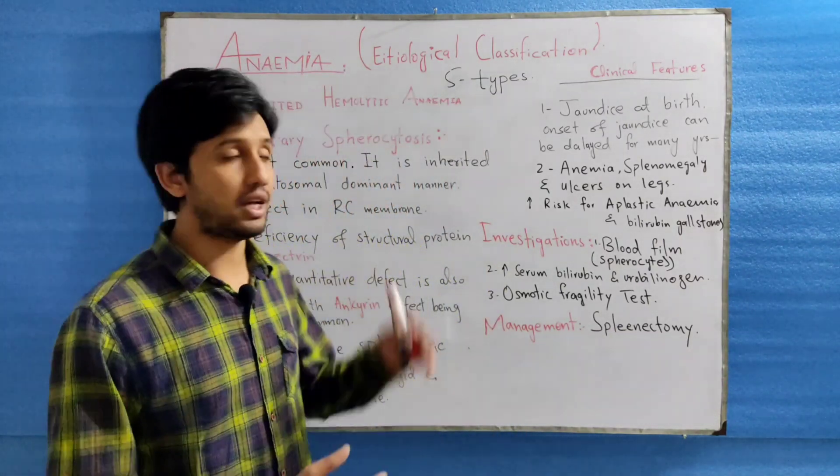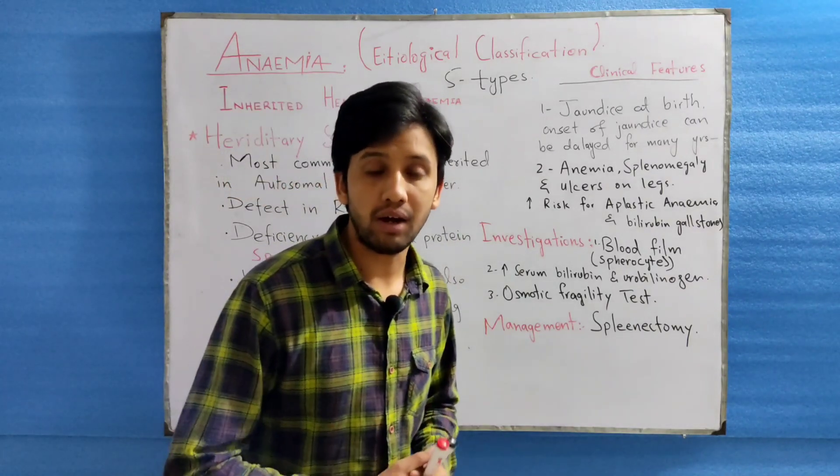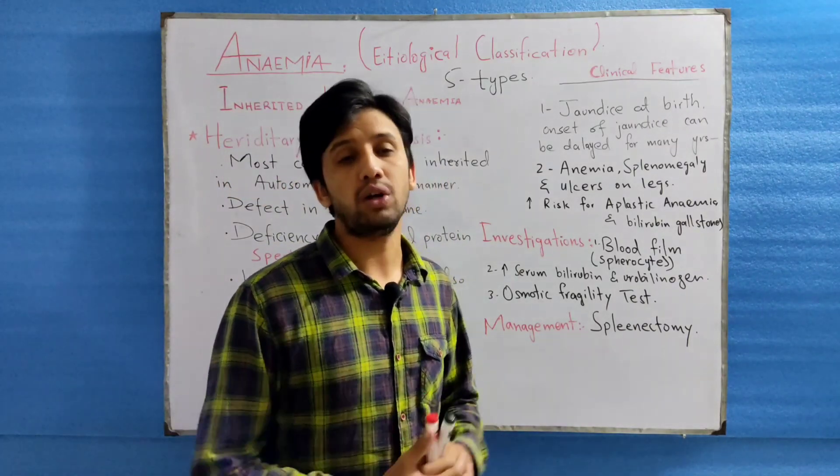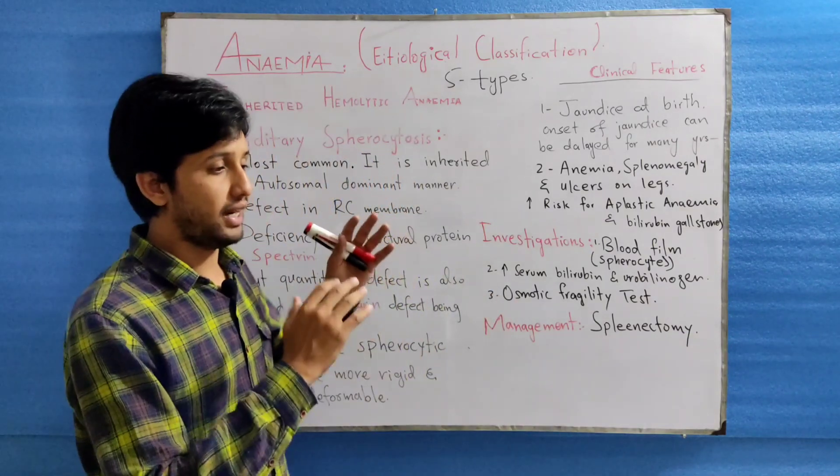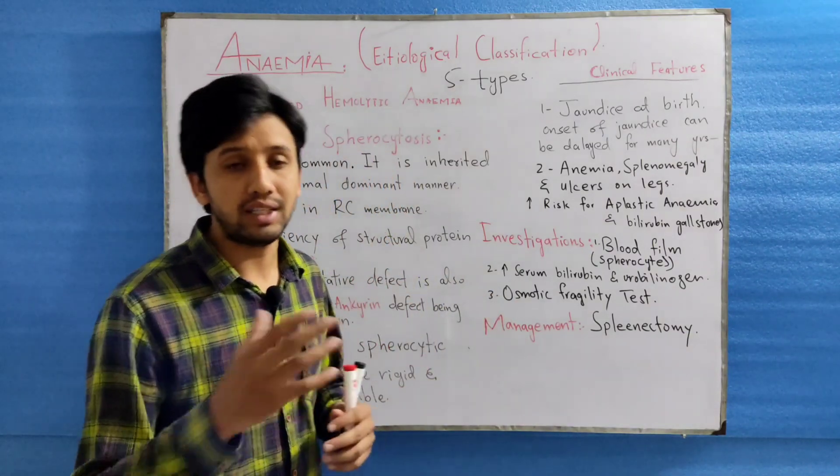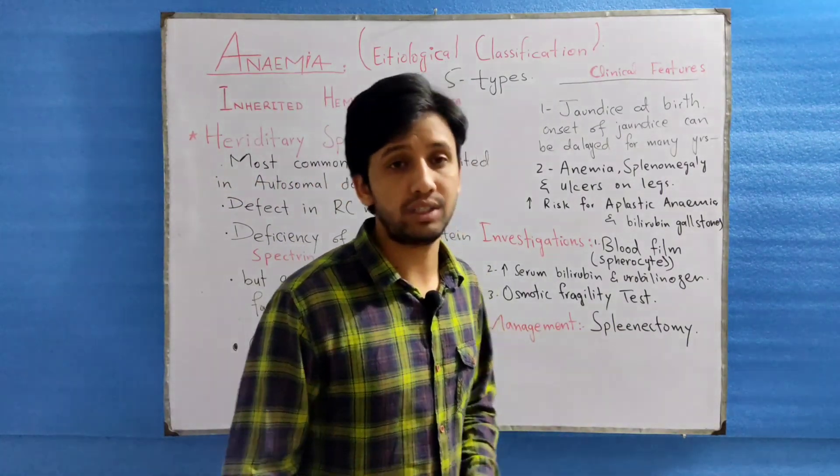Now today we are going to discuss inherited hemolytic anemia. Inherited hemolytic anemia also involves the hemolysis of the RBCs, but the factors involved here are the red cell membrane defect or either it may be the abnormalities of the hemoglobin or there may be another reason.